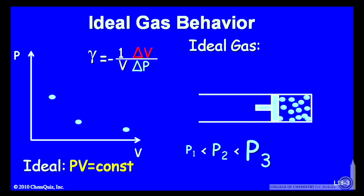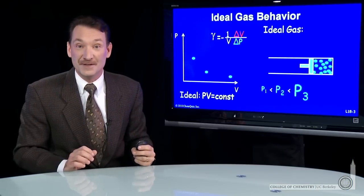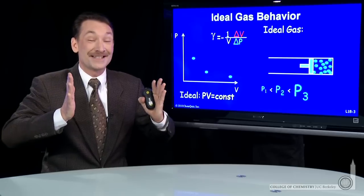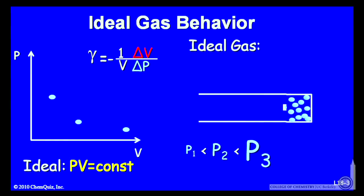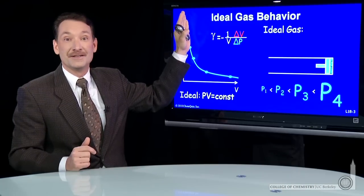But you'll notice the pressure increases get more dramatic for the same volume decrease. That is, the compressibility decreases. It gets harder to compress the gas. As you continue to compress the gas, that isotherm shape for the ideal gas asymptotically approaches zero volume.